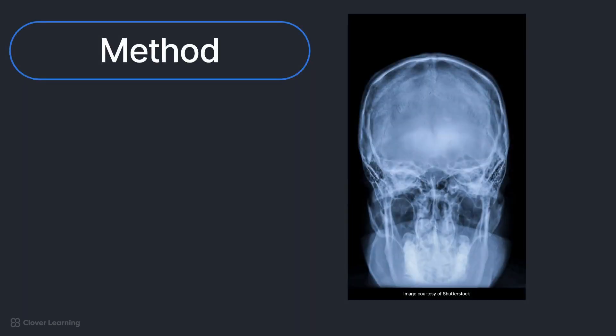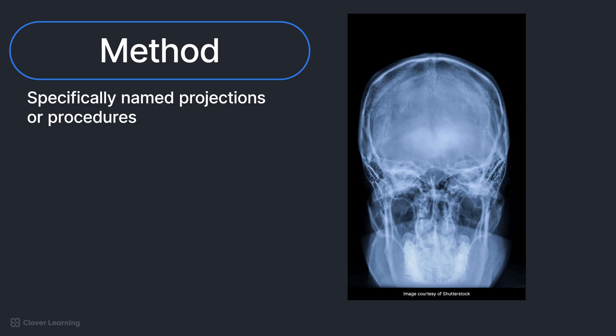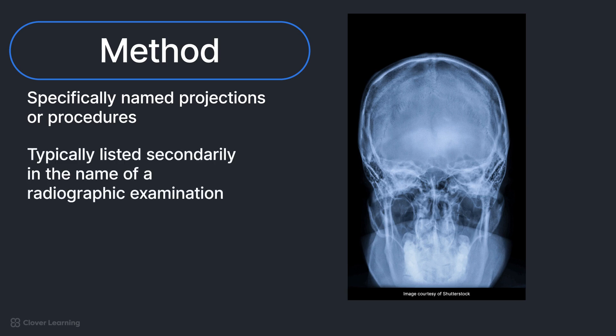Certain radiographic projections and procedures have been named in honor of their respective developers. The term methods is used to describe these specifically named projections or procedures. Typically, the method is listed secondarily in the name of a radiographic examination. For example, AP axial projection, or town method, skull.